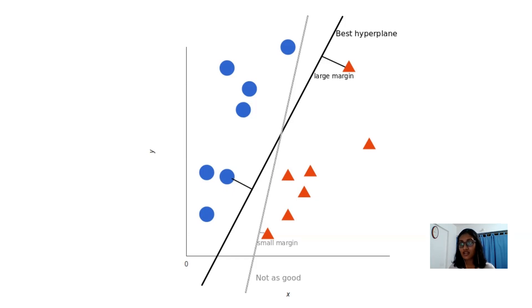But what exactly is the best hyperplane? Let's revise. For SVM, it's the one that maximizes the margins from both the tags as you can see over here. The grey line is not our decision boundary, the best hyperplane, because it is not giving us the large margin. Whereas the darker shade line which is called the best hyperplane is our desired hyperplane here.